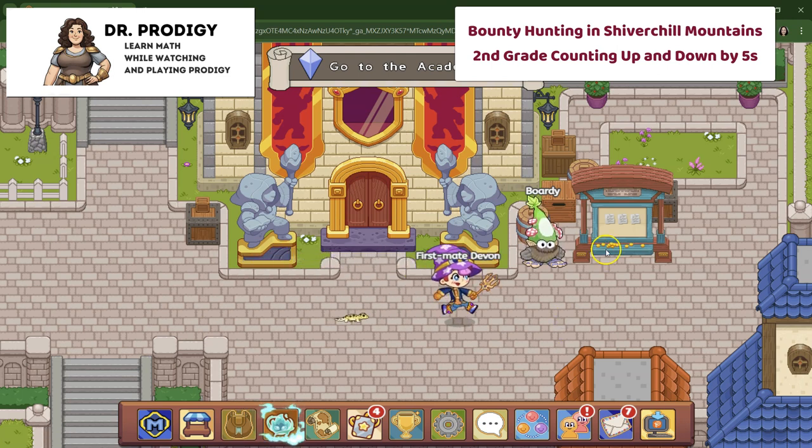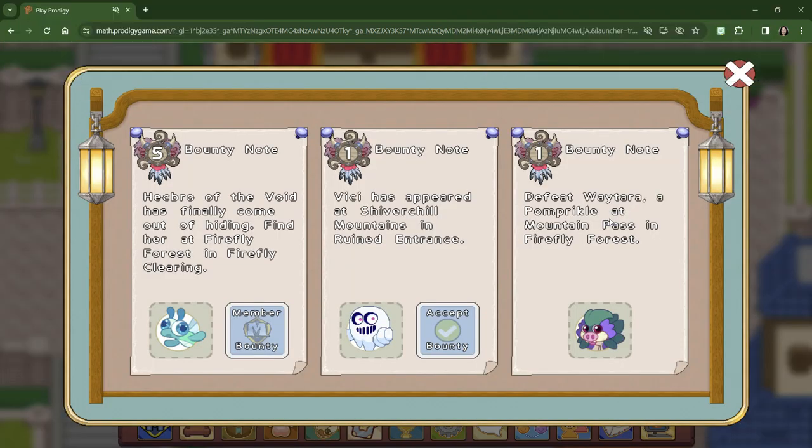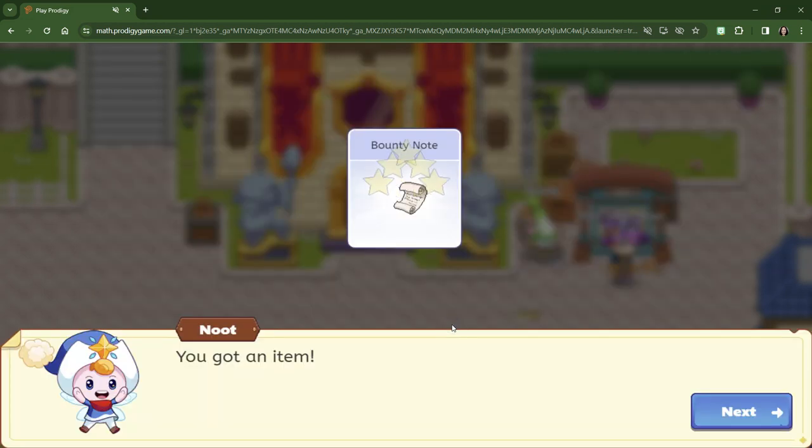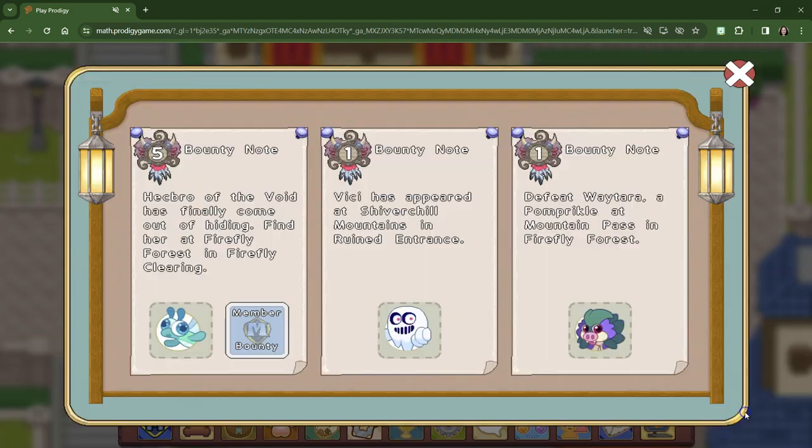So I did some research and I noticed that one person who defeated the Puppet Master ended up having a hundred level pet, a hundred level avatar for themselves. I'm thinking that we really need to level up. So I'm at the bounty board. This is a member bounty, so we're not going to do that. This one has us going to Shiverchill Mountains and this one has us going to Firefly Forest. So let's accept the bounty to go to Shiverchill Mountains.